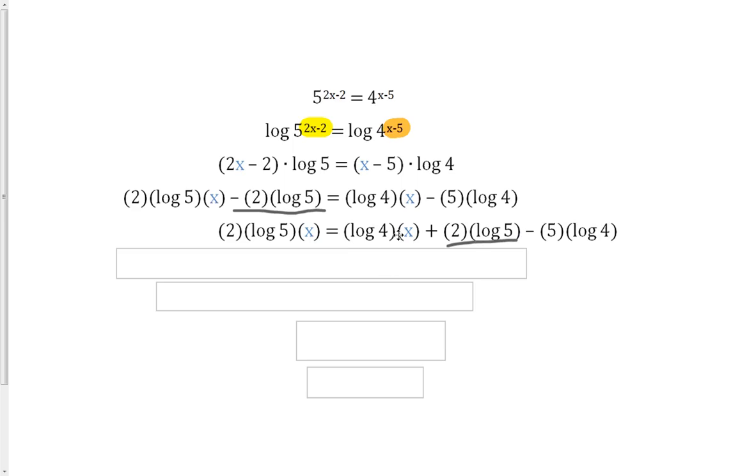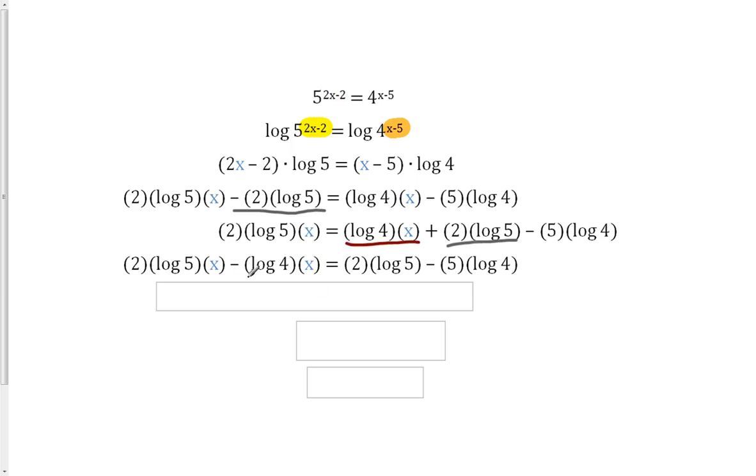Then we want to get this x term. We're going to subtract that from both sides so that we get that over to the left side. So this log 4 times x is going to be negative log 4 times x on the left side.